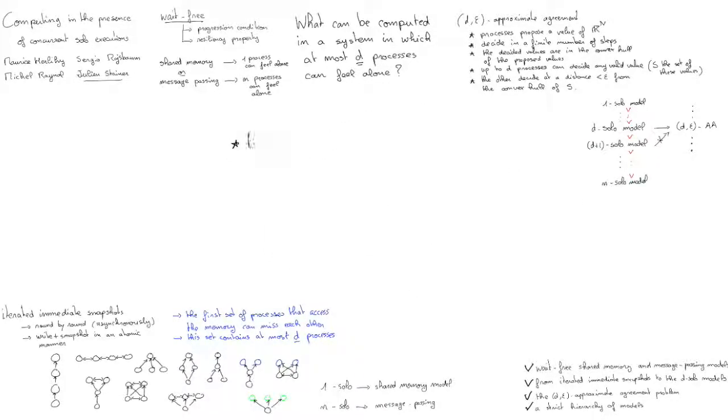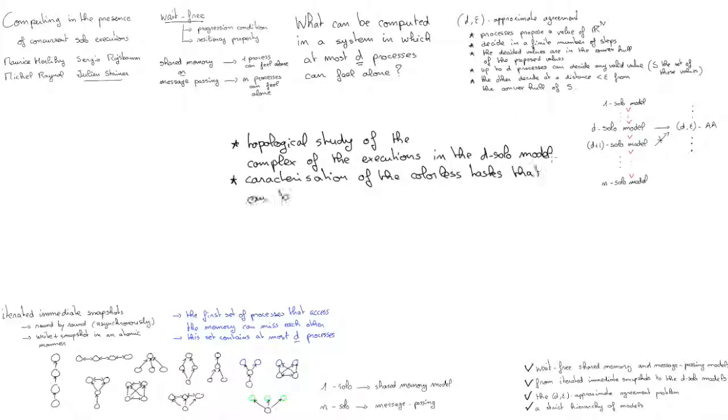There is additional work that has been done in the full paper. We did a topological study of the complex of the executions in the D-solo model. So it means studying the structure of the complex itself and the relationships between two executions. For example, if a set of processes cannot distinguish between two executions, then it's going to appear in the description by the topology. We also provided a characterization of the colorless tasks that can be computed in a D-solo model.